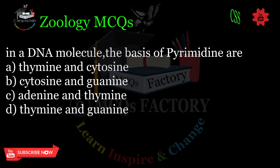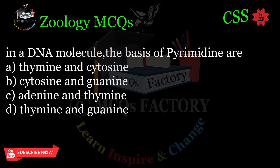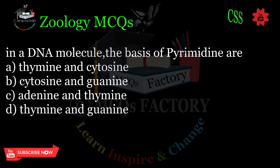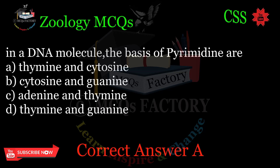In a DNA molecule, the pyrimidine bases are: A. Thymine and cytosine. B. Cytosine and guanine. C. Adenine and thymine. D. Thymine and guanine. Correct answer: A.